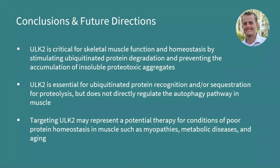Some conclusions we made are that ULK-2 is critical for skeletal muscle function and homeostasis to maintain force production, regulated through ubiquitinated protein degradation and prevention of aggregate protein accumulation. ULK-2 is essential for ubiquitinated protein recognition and/or sequestration for proteolysis, but does not directly regulate autophagy itself. Targeting ULK-2 may represent a potential therapy to aid in adverse myopathic conditions. We are currently investigating the precise role of ULK-2 in skeletal muscle by studying other models that manipulate its expression and examine how ULK-2 regulates degradation of ubiquitinated protein aggregates.